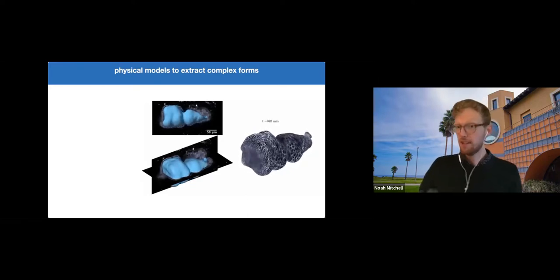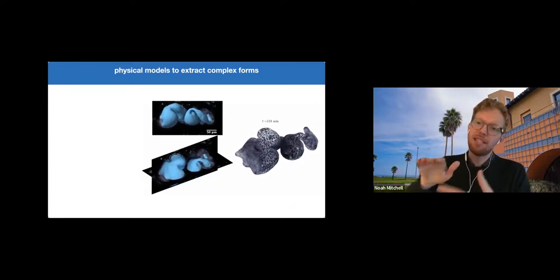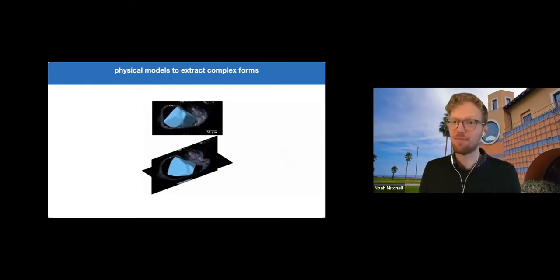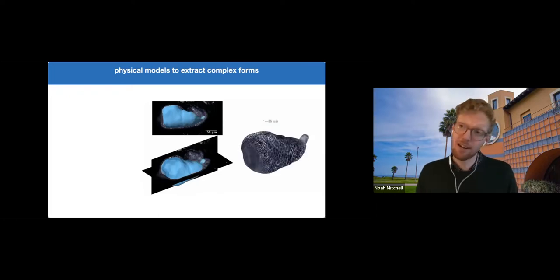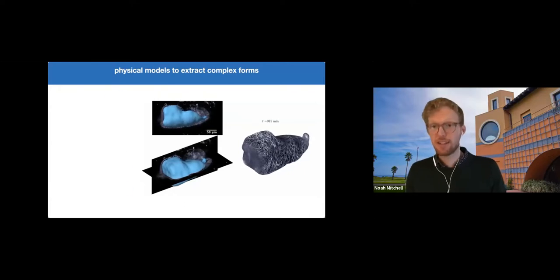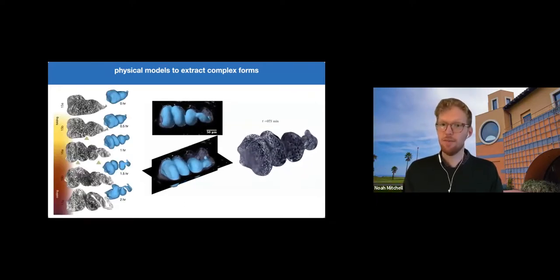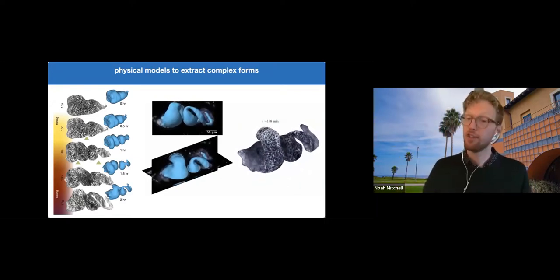So this gives us the ability not only to capture the shape, but also to image specific layers of the tissue. So we can project the data on specific surfaces. And here on the right, this video is showing the inner endodermal layer. Using these extracted shapes, we can see clearly now that a constriction forms in the middle of the organ, and then two more that subdivide the gut into four chambers.